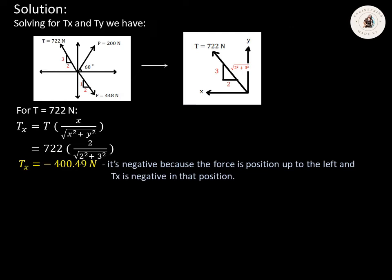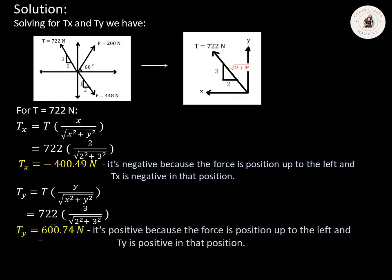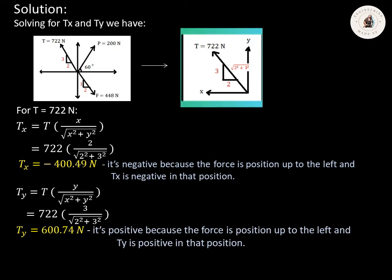Next, we're going to solve for TY. We use the formula TY equals T multiplied by Y over the square root of X squared plus Y squared. T is 722, Y is 3, and X is 2, so TY equals 722 multiplied by 3 over the square root of 2 squared plus 3 squared. Using our calculator, TY equals 600.74 Newton. The sign convention is positive because the force is positioned up to the left and TY is positive in that position.